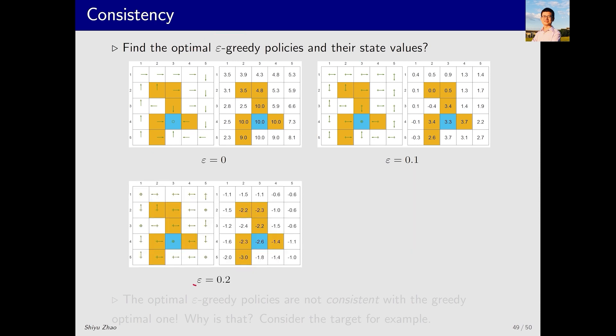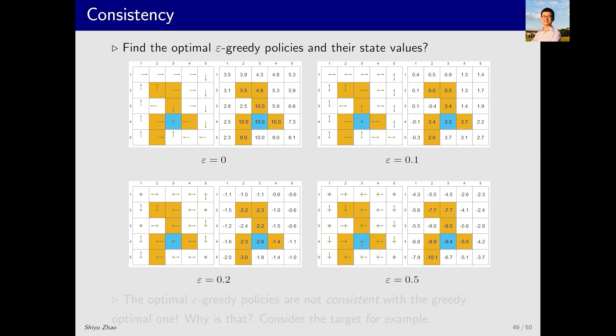However, when epsilon is set to 0.2, the resulting optimal epsilon greedy policy no longer maintains consistency with the optimal greedy policy. If you convert it, they differ. Similarly, with epsilon set to 0.5, the resulting optimal policy is also not the optimal greedy policy.